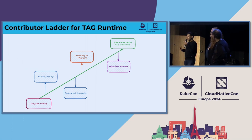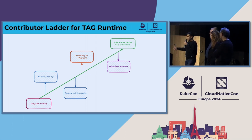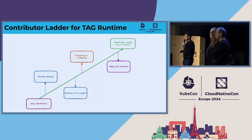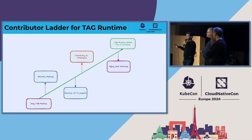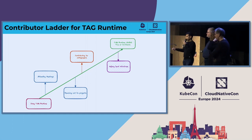The contributor ladder for TAG Runtime roughly looks like this: you join the TAG, start attending meetings, start reaching out to projects, contribute to white papers, get involved in TAG deliverables, then help lead initiatives, and eventually become a lead — maybe a co-chair or tech lead. Your journey may not look exactly like this, but it's an overall summary. This is an effort we're also trying to drive across all other TAGs to get a contributor ladder that's cross-TAG and not specific to just one.